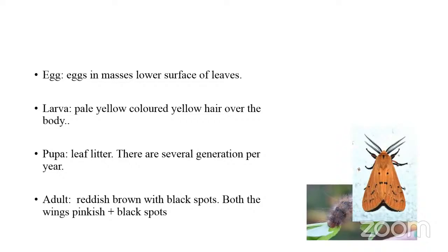The female lays eggs in masses on the lower surface of the leaves. The larvae are pale yellow colored with yellow hair all over the body. They are polyphagous pests causing defoliation. The pupa occurs in leaf litter close to the plants. They are multivoltine. The adult is reddish brown in color with black spots, and both wings are pinkish with black spots.